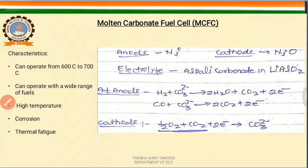The molten carbonate fuel cell can operate from 600°C to 700°C. It can withstand high temperatures but has the disadvantage of corrosion and thermal fatigue.